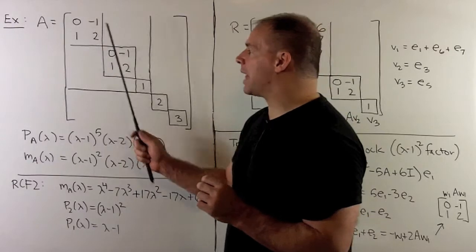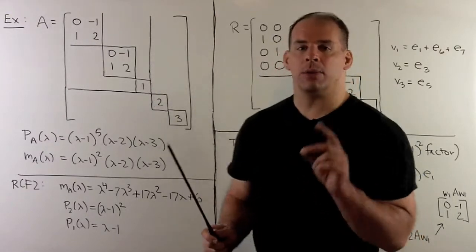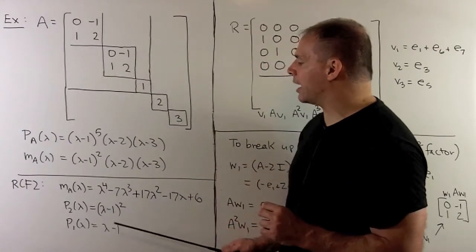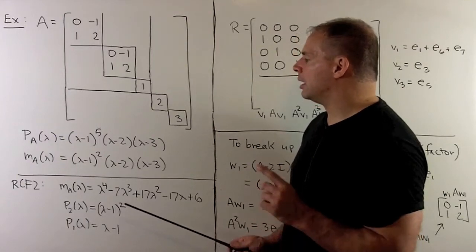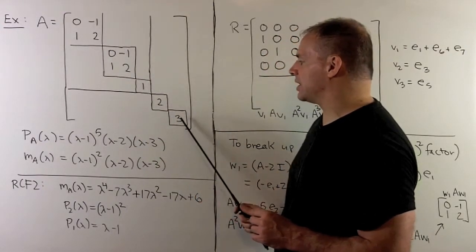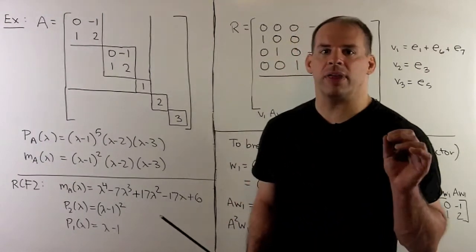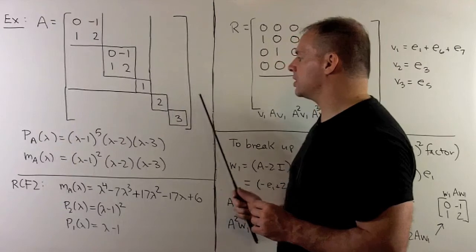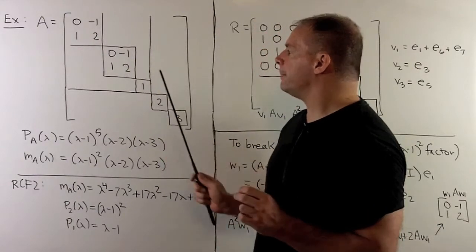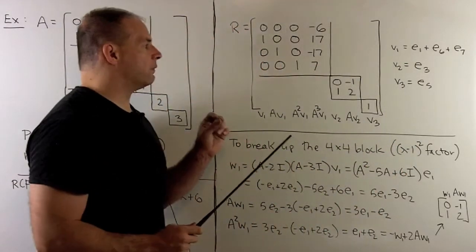We've combined the (λ−1)² block with the (λ−2) and (λ−3) blocks. Left over are the remaining (λ−1)² and (λ−1) blocks, which we cannot combine since they correspond to the same irreducible factor. So we get separate blocks for (λ−1)² and (λ−1). The cyclic vectors for each block will be E_1, E_3, E_5, E_6, and E_7. For the companion matrix corresponding to the minimal polynomial, the cyclic vector is E_1 + E_6 + E_7. For the two remaining blocks, we use E_3 and E_5.